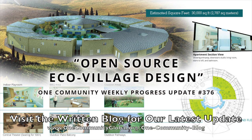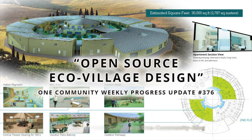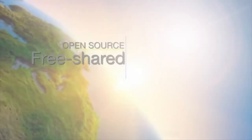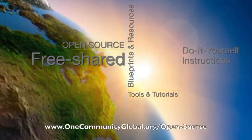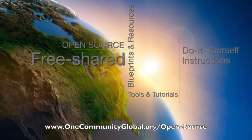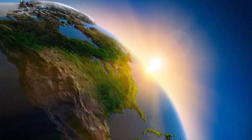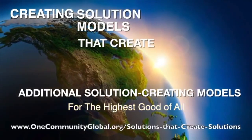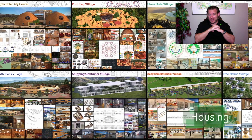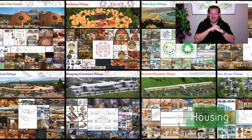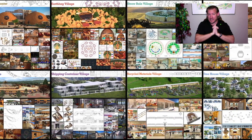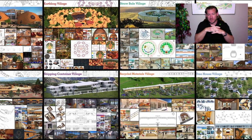Open Source Ecovillage Design — One Community Weekly Progress Update Number 376. One Community is a 501c3 non-profit organization creating open source and free shared blueprints, resources, tools, tutorials, and do-it-yourself instructions for highest good living. My name is Jay Sabel and I'm the Executive Director. One Community is bringing together people with a consciousness and desire for the highest good of all life on this planet to build sustainable, self-replicating teacher demonstration hubs as a pathway to global sustainability.